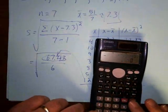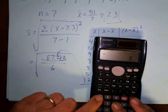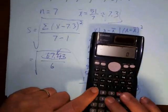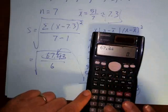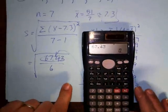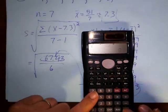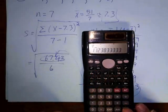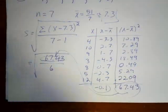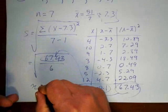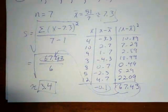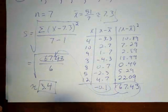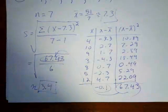And so I'm going to take 67.43, and then I'm going to divide that by 6, and then I'm going to take the square root, and I get approximately 3.4 is what I get for my standard deviation.